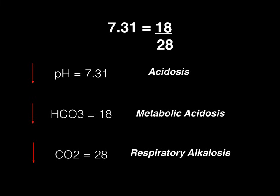The pH is 7.31 — when pH drops below 7.40, that's called an acidosis, so we name this an acidosis. Now we look at the numerator: the bicarb is 18, which is down. A decreased numerator means a decreased value for the equation, so we name the bicarb of 18 as a metabolic acidosis. It's metabolic because we're dealing with bicarb, and it's an acidosis because decreasing the numerator from the normal value of 24 down to 18 drives the pH down. Bicarb dropping is metabolic because it's bicarb, and acidosis because the numerator decreases, which we expect to decrease the pH.